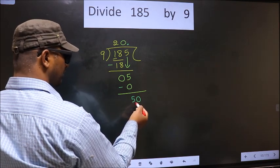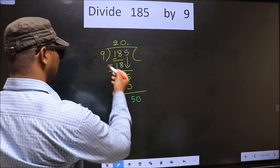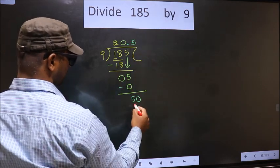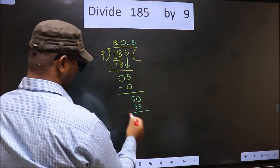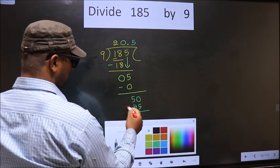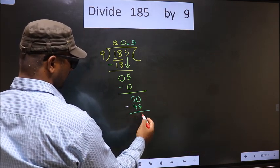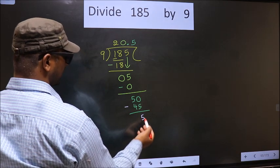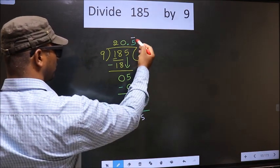Now here 50, a number close to 50 in the 9 table is 9 times 5, which is 45. Now you subtract. 50 minus 45 is 5. We got 5 again. So we get a bar on 5.